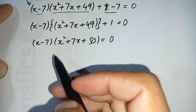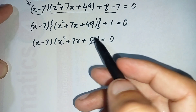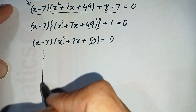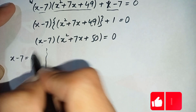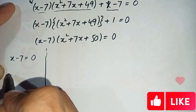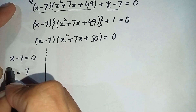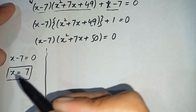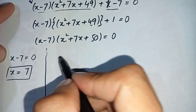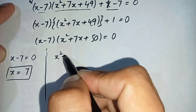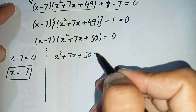So there are two possibilities: either (x - 7) = 0 or the polynomial (x² + 7x + 50) = 0. From x - 7 = 0, shifting -7 to the right hand side gives x = 7. This is the first possible solution of the given cubic equation. Next, we will factorize x² + 7x + 50 = 0.